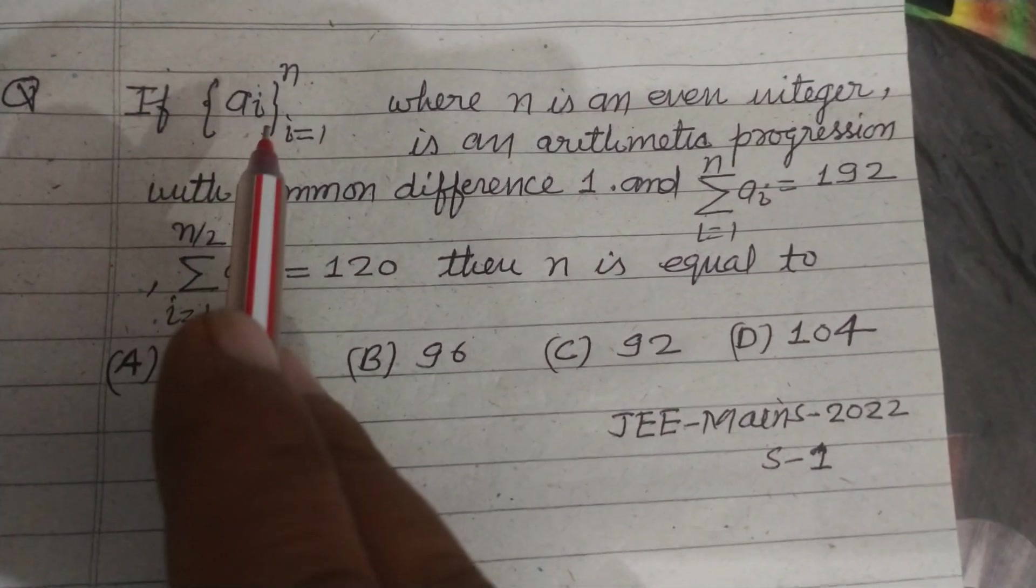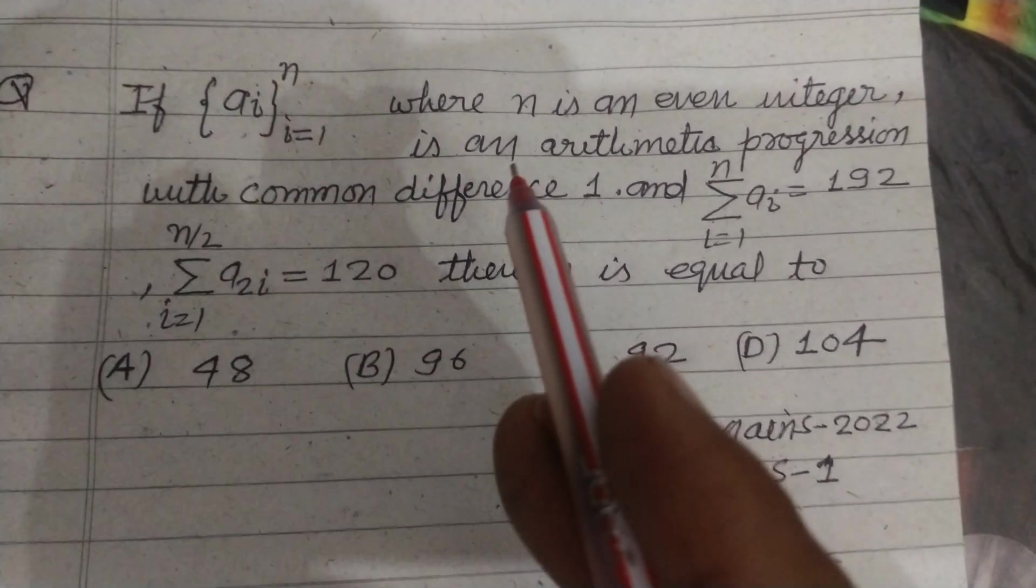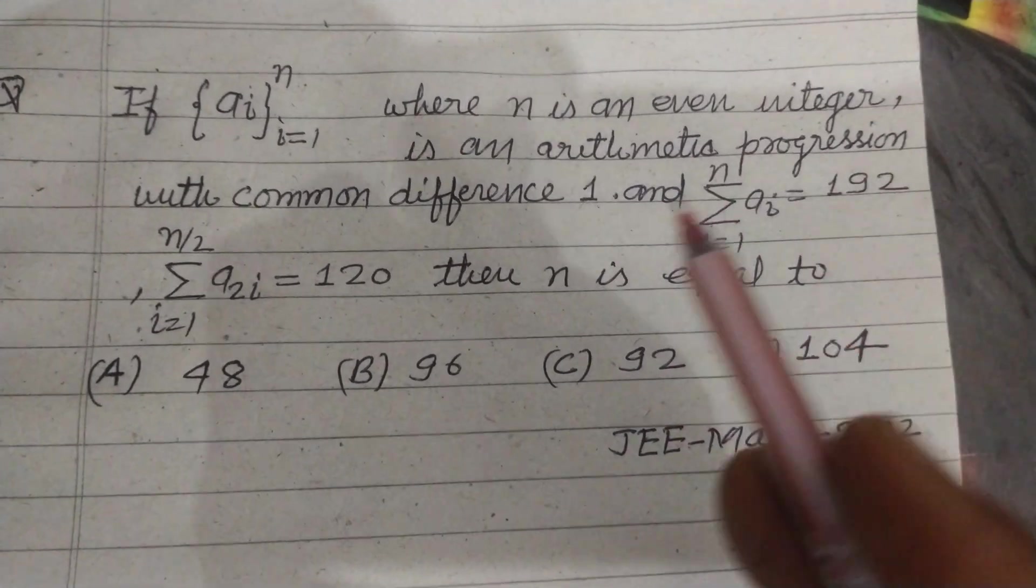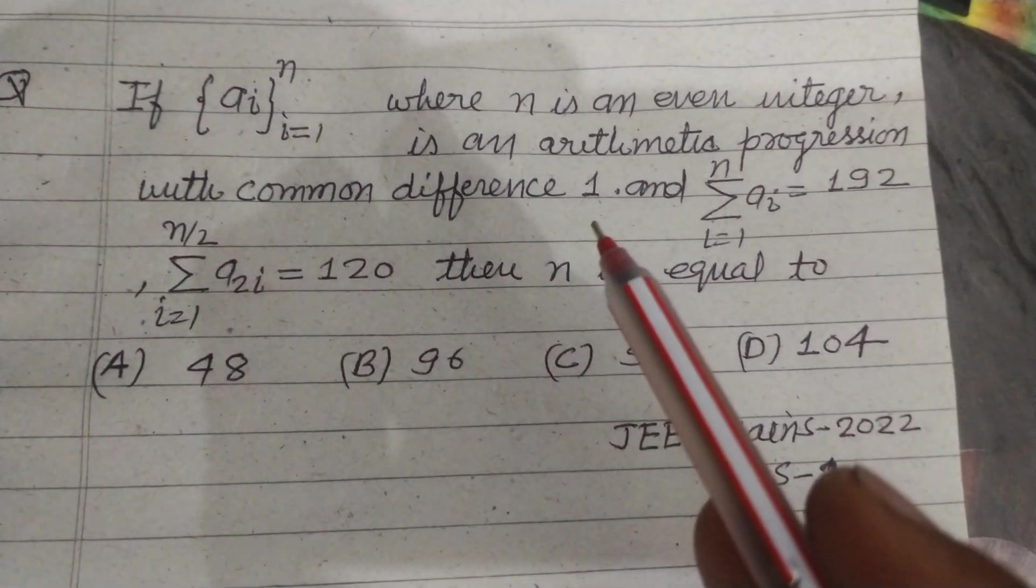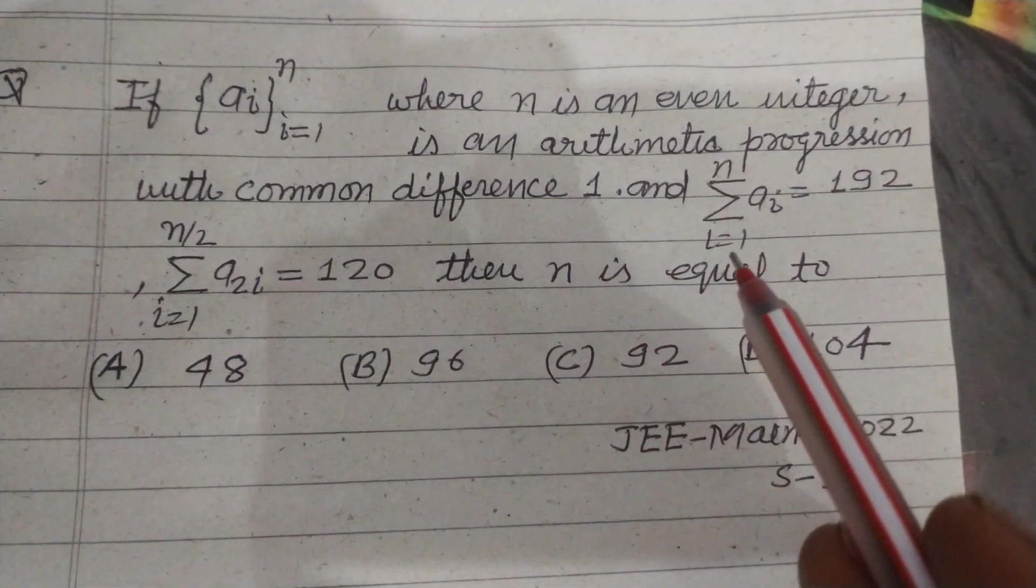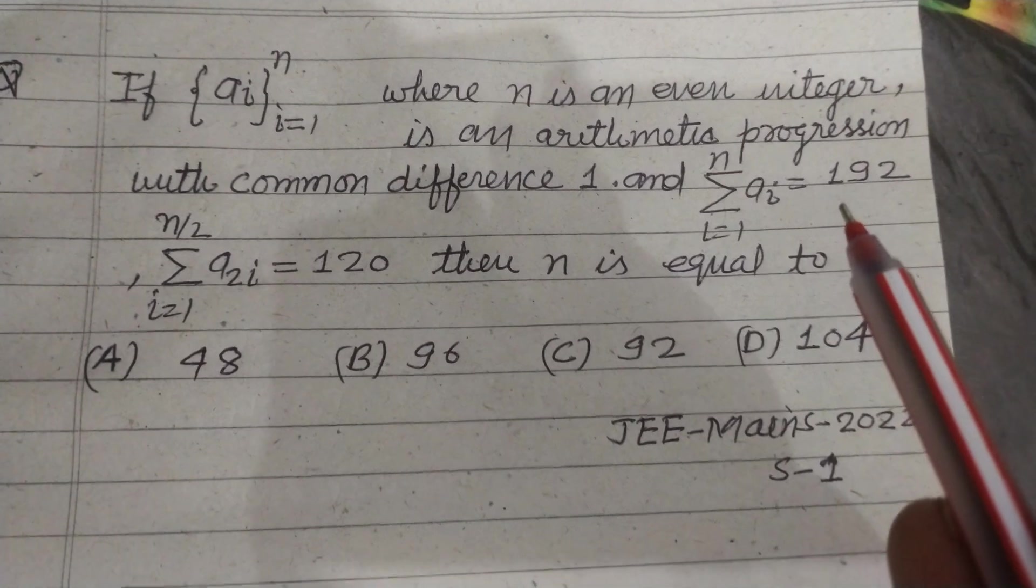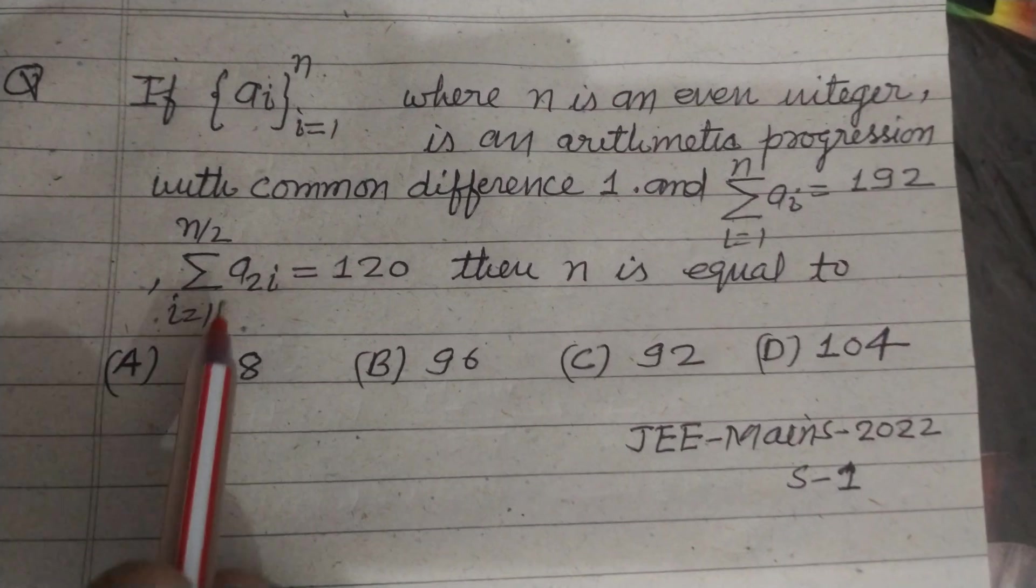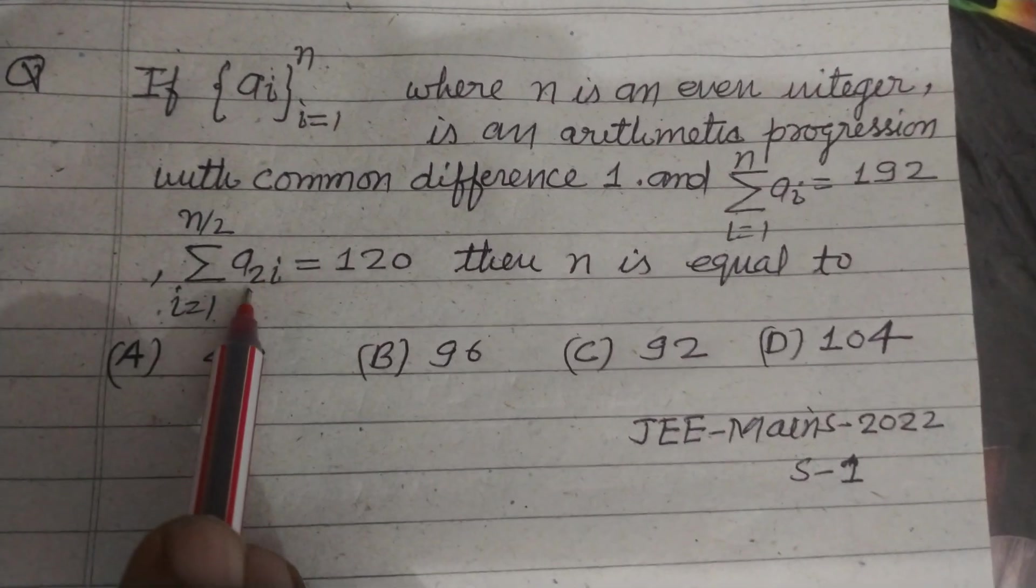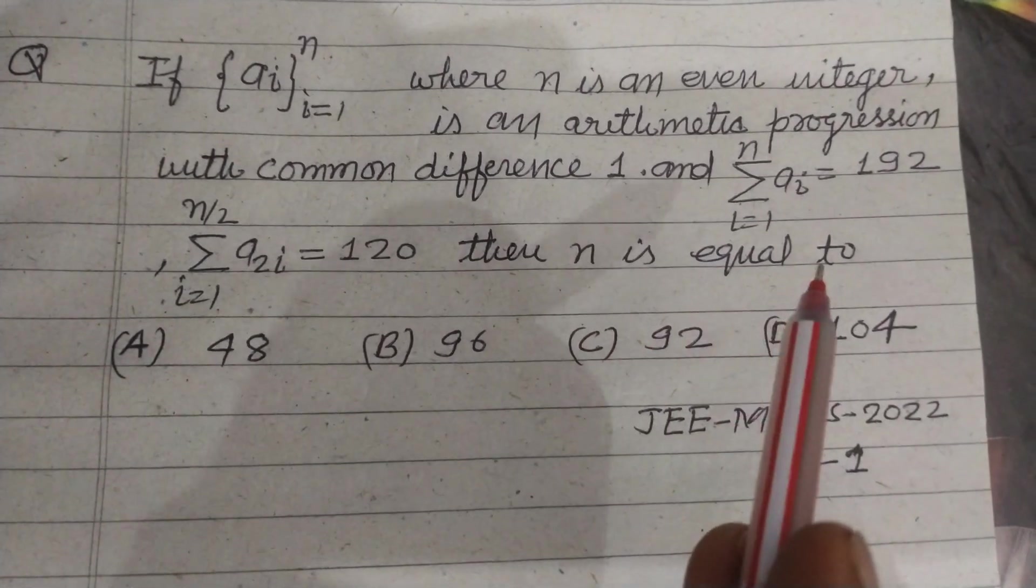If ai, i=1 to n where n is an even integer, is an arithmetic progression with common difference 1 and sigma i=1 to n of ai equals 192, and sigma i=1 to n/2 of a2i equals 120, then n is equal to what?